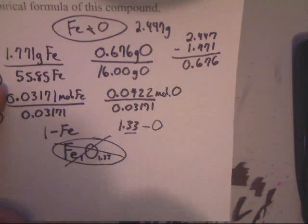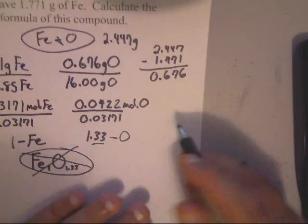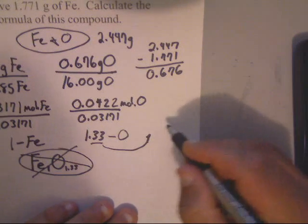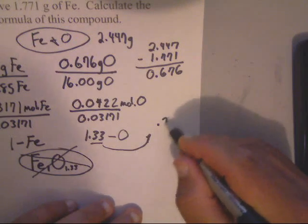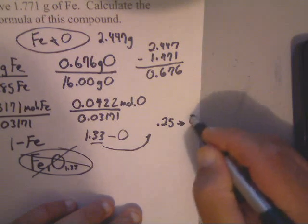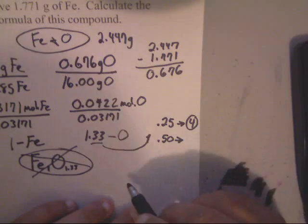So what we need to do is we need to look at some things. Now, here's some guidelines. On these decimal things, if you see 0.25, multiply everything by 4. If you see 0.5, multiply everything by 2.